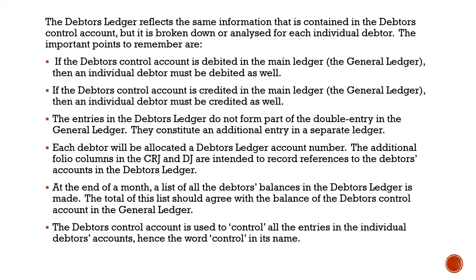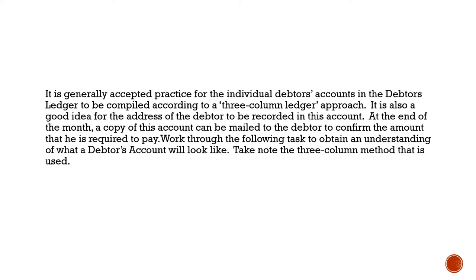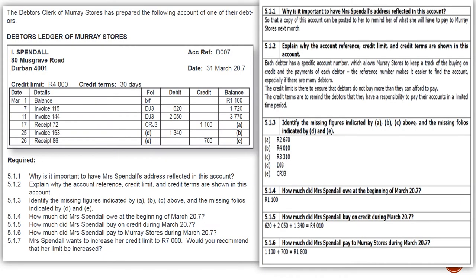If we received money from D1 in the cash receipts journal, or if D1 purchased more stuff in the debtors journal, or returned stuff in the debtors allowances journal, all of this information will come together in one debtors ledger — the debtors ledger of D1. It is generally accepted practice for an individual debtor's account in a debtors ledger to be compiled according to a three-column ledger approach. It is also a good idea for the address of the debtor to be recorded in this account.